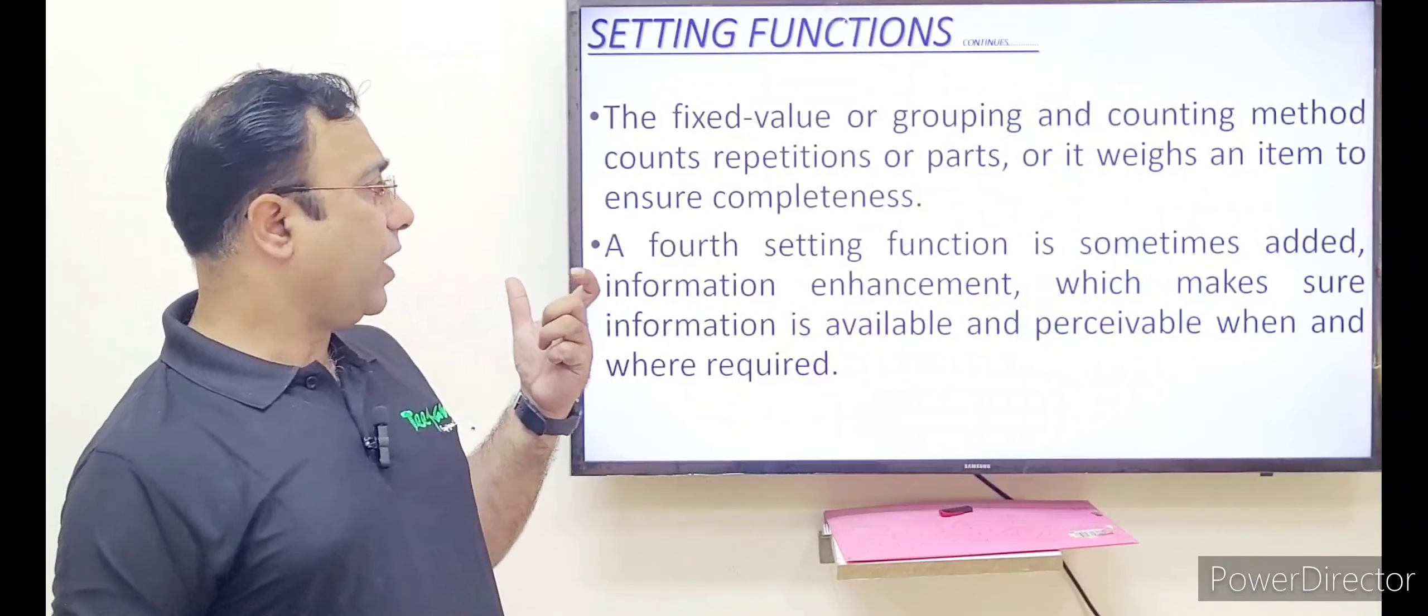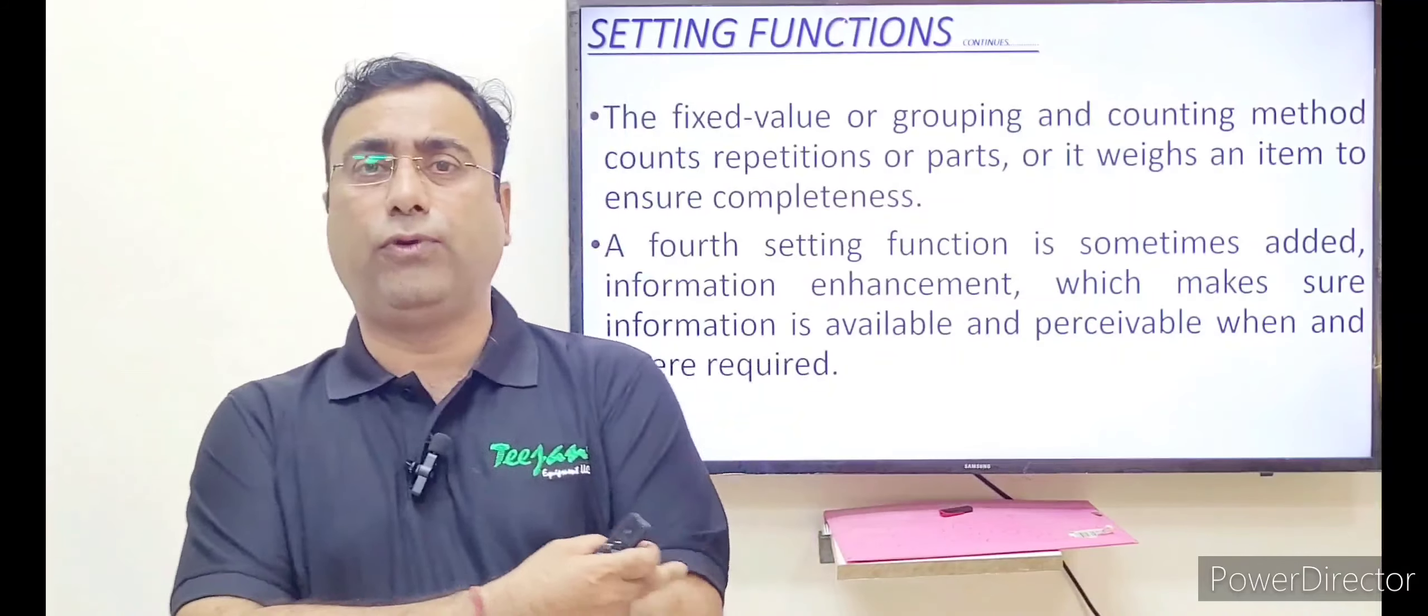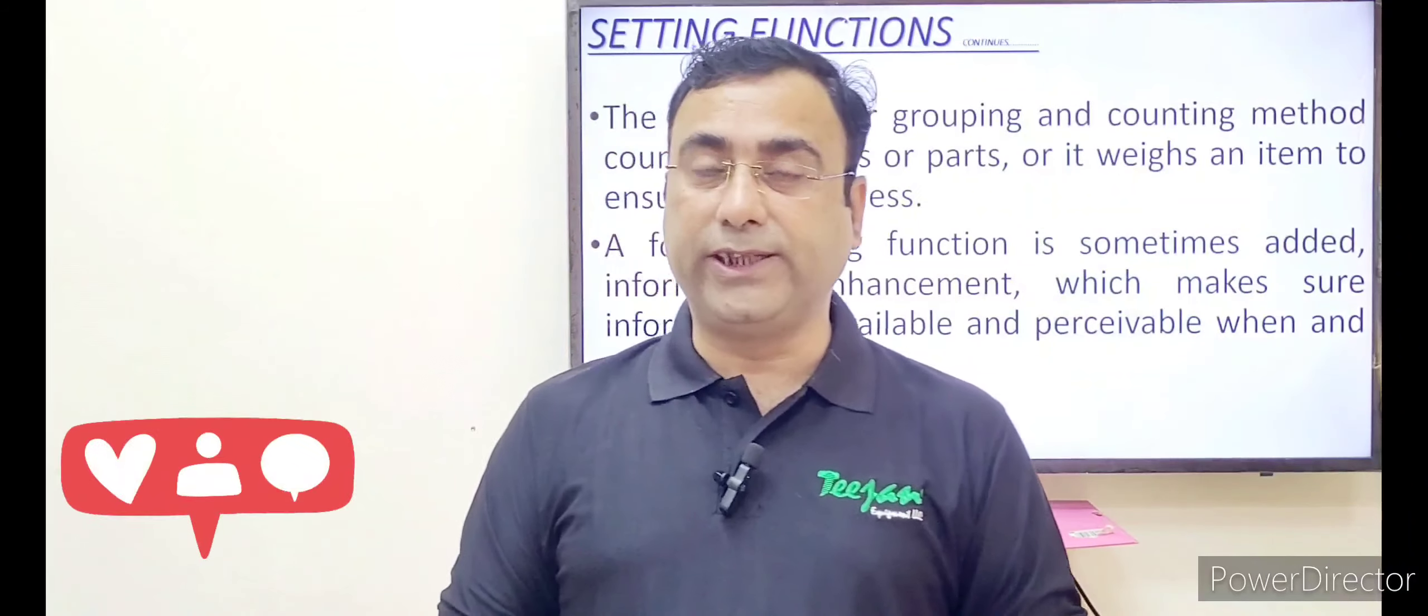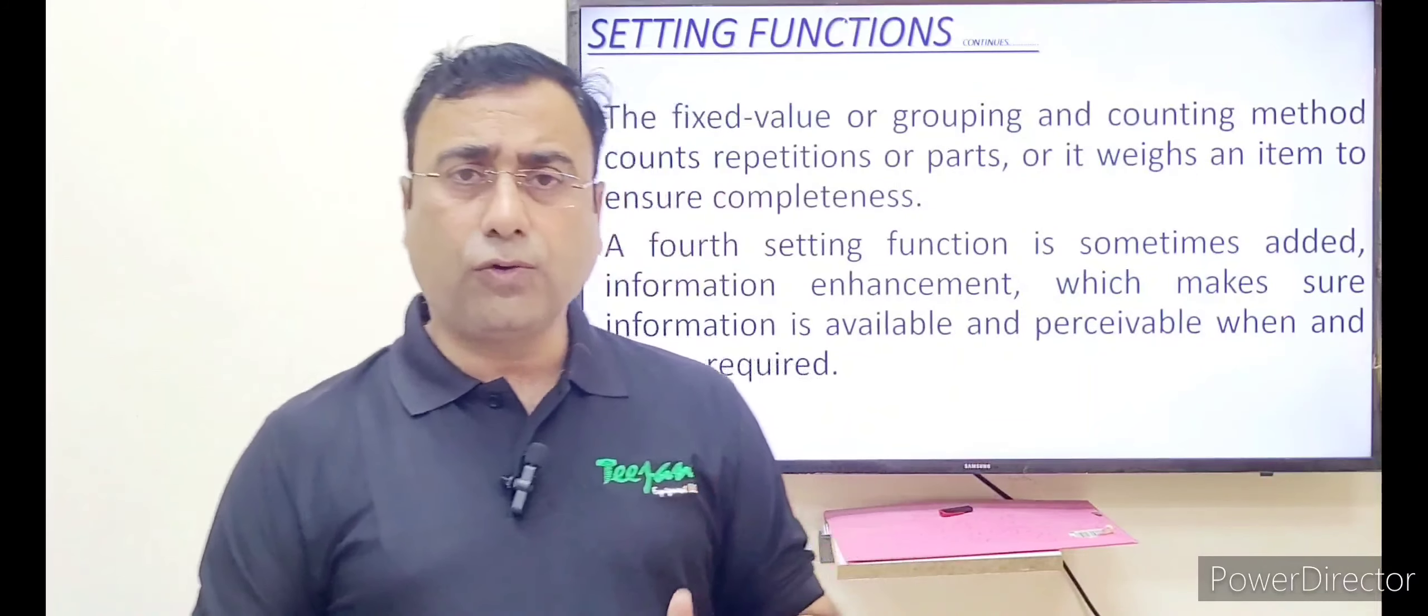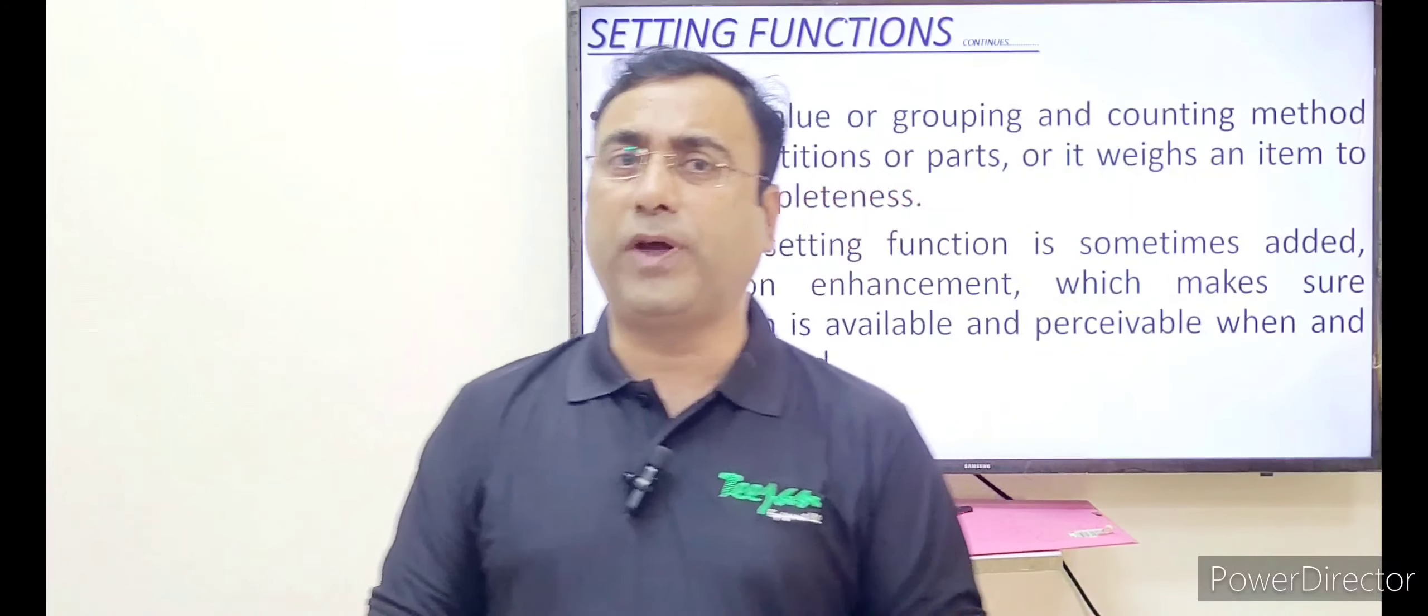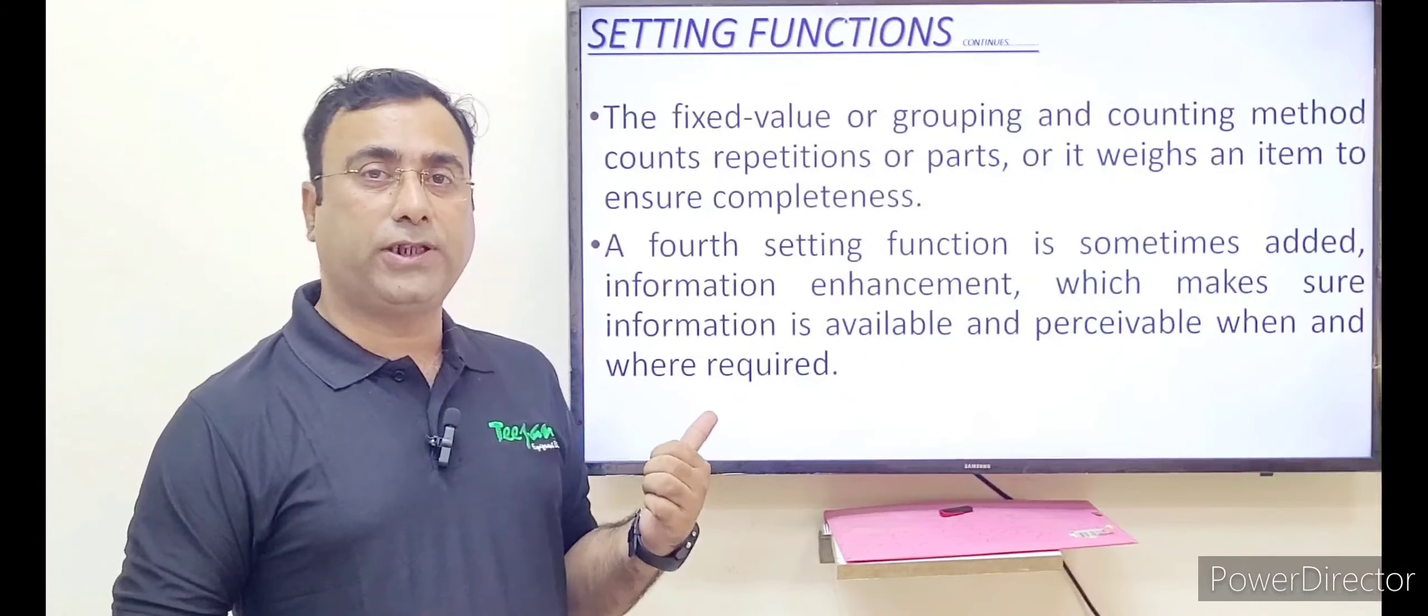Then the fourth is information enhancement. Earlier stage, when we are supplying a material or when we are supplying a product, only bill of lading with the transport stop was mandatory. But now they are adding COA, which is quite mandatory. That paper describes you what is the product, what is their dimension, what is their characteristic and what is the impact of this product if it is sold in the market. So this is information enhancement.